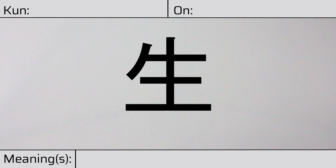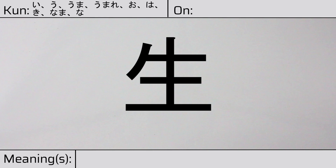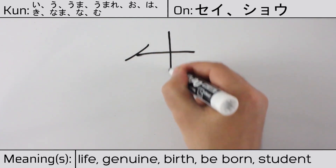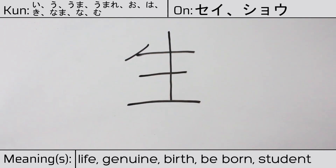Welcome to this lesson on Japanese kanji. Today, we'll be discussing this character. This kanji has kunyomi or Japanese readings of i, u, ma, umare, o, ha, ki, nama, na, or mu, and it has onyomi or Chinese readings of sei or shou. This character has the meanings life, genuine, birth, be born, or student. Here is the stroke order. This character has no radicals.